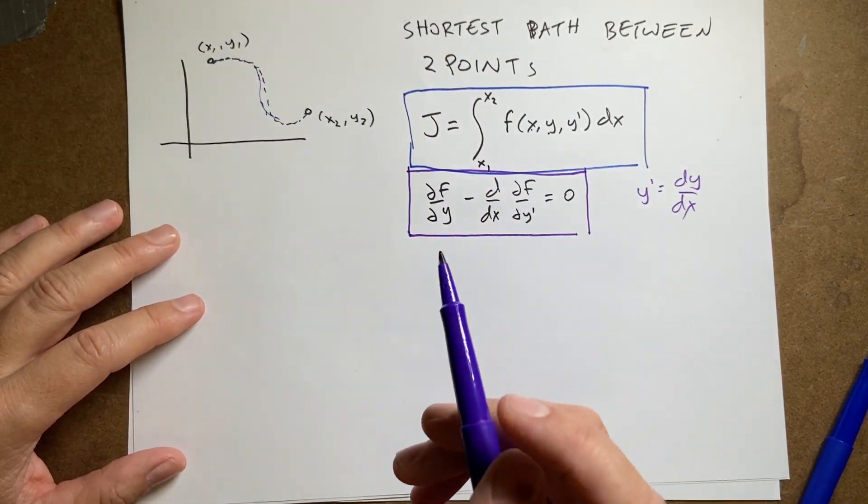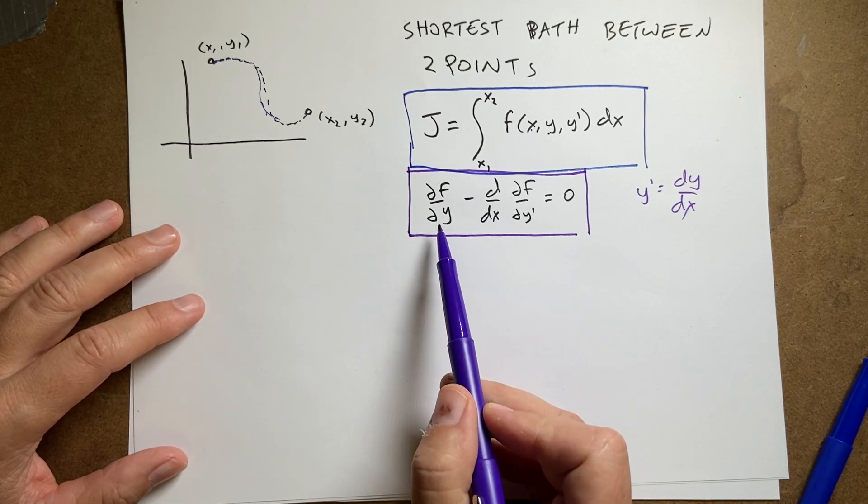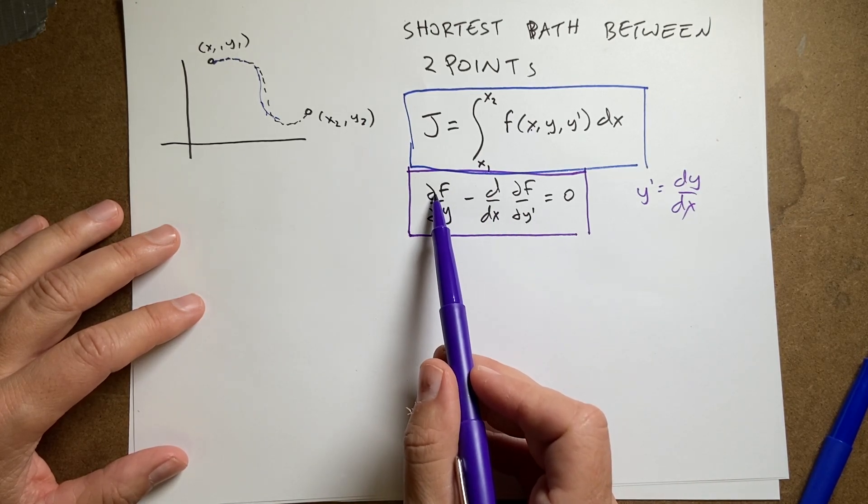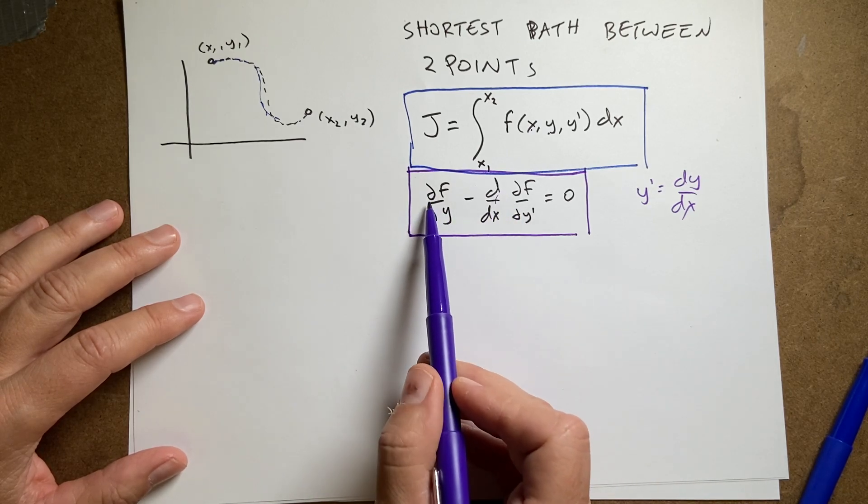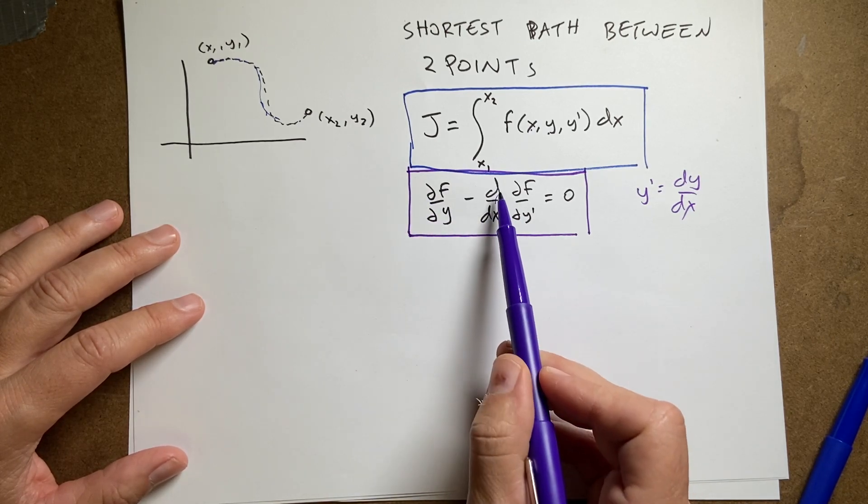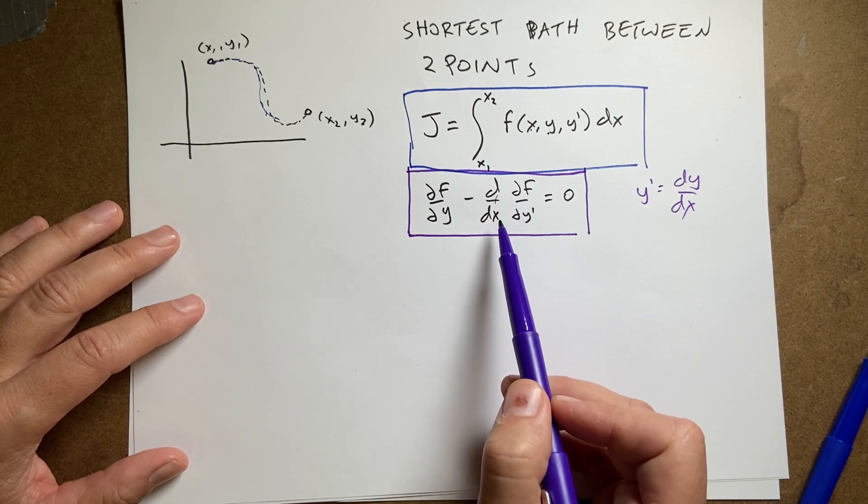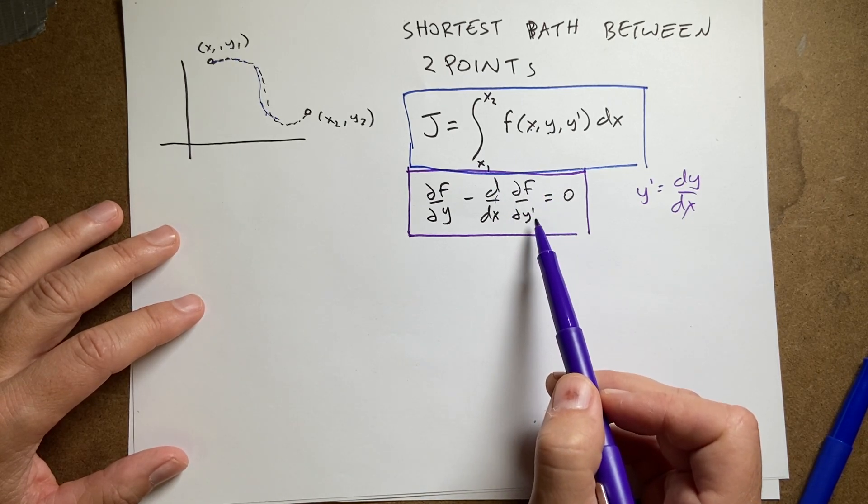Then, the function that minimizes this has to satisfy this equation that says the partial of f with respect to y minus the derivative. And remember, these are partials, not derivatives, and that's an actual derivative. The derivative with respect to x of the partial of f with respect to y prime is equal to 0.